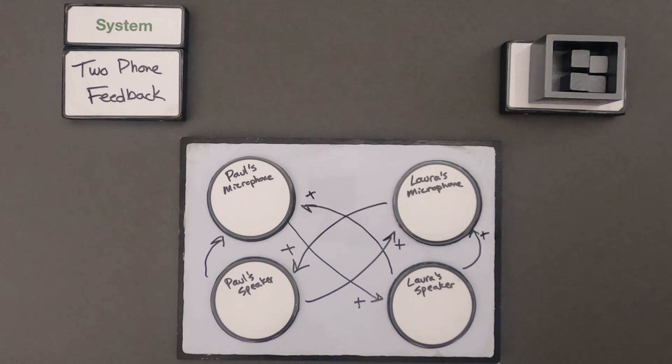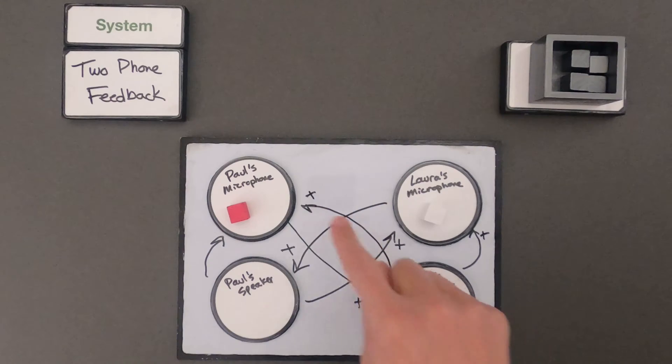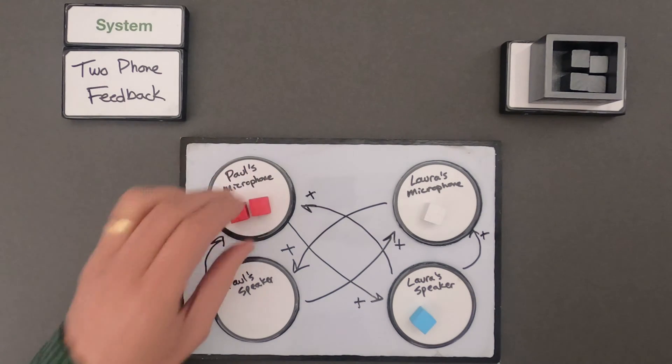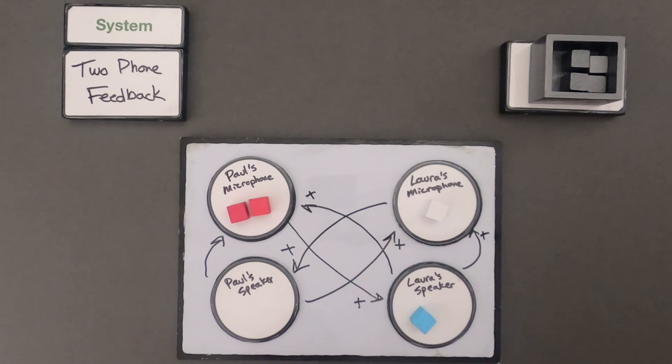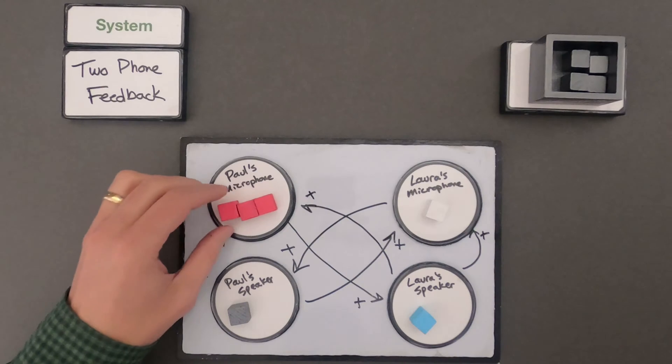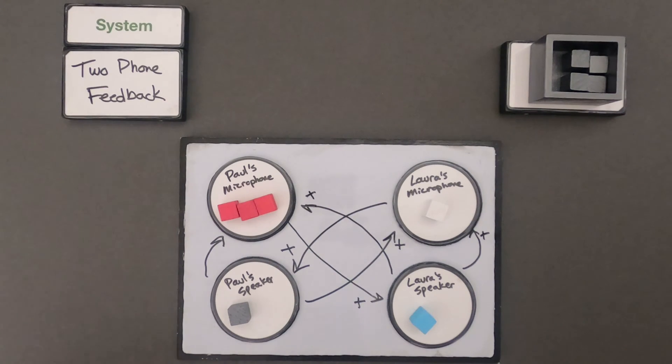And so when you're creating a simulation like this, you can just use different color to represent the amount of volume. So this red dot or red cube represents the volume in my microphone. Let's go to Laura's speaker. So Laura's speaker is going to increase. So an increase in this leads to an increase in that. We're also going to increase the sound going into Laura's microphone, but it also feeds back to my microphone. Laura's microphone, an increase in that increases the volume in my speaker, which feeds back to my microphone, which feeds back to Laura's microphone. And this whole thing is just going to keep going and going and going.